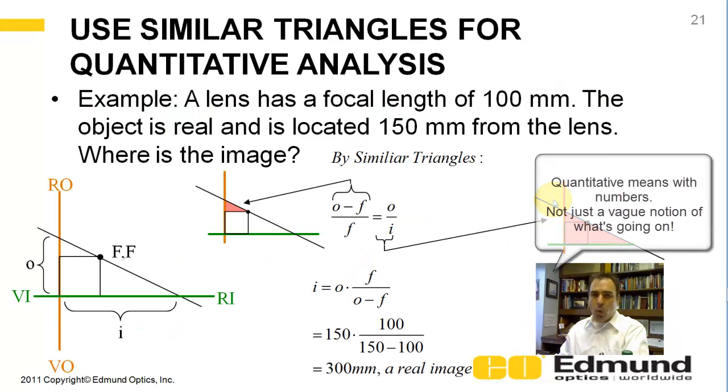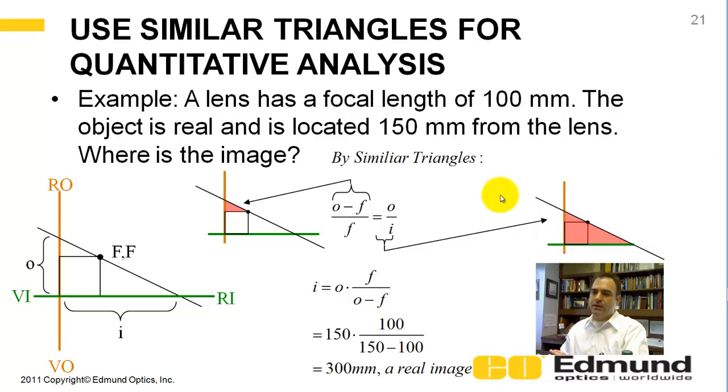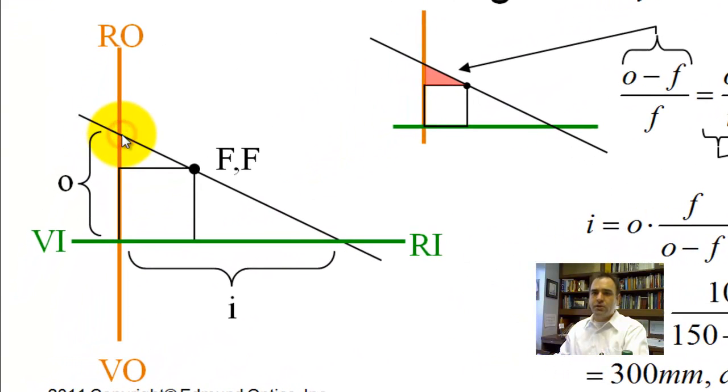Let's talk about quantitative. So, this is great for understanding what's going on. You can also use it for quantitative calculations without getting confused with the sign convention. Let's assume we've got a focal length of 100 millimeters. We've got a real object that is 150 millimeters from the lens. So, a real object, 150 millimeters from the lens, going through the fulcrum. This is 100 millimeters. We know we're going to have a real image. We know that a priori.